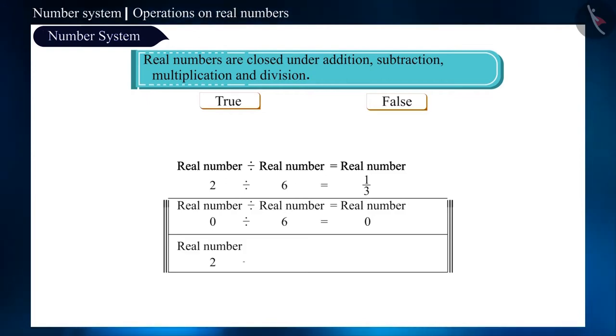But, if we take 0 instead of 6 and divide 2 by 0, then the number we get is undefined. This means, here we did not get a real number. So, is the given statement correct? Think about it and confirm your answer.